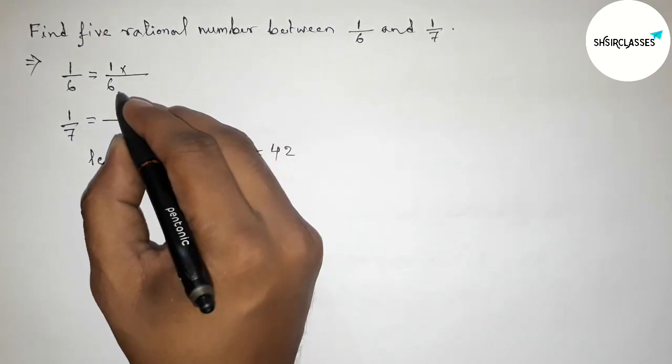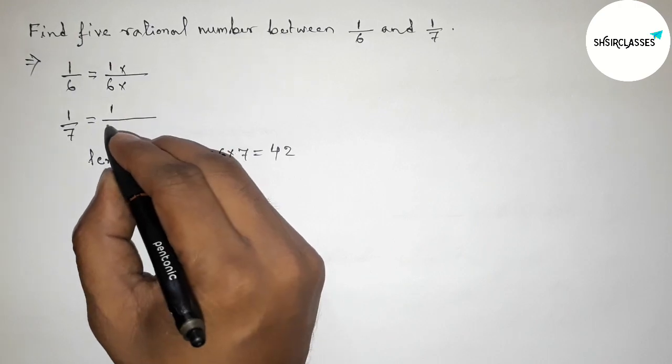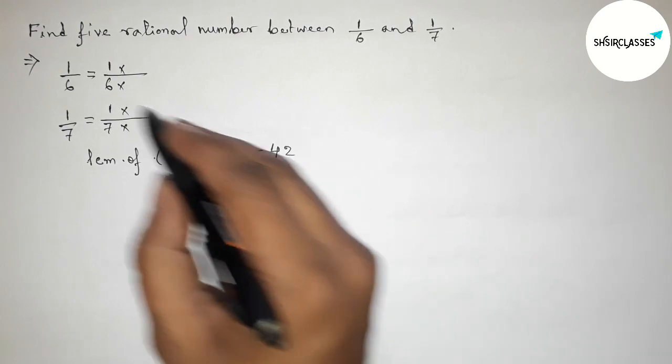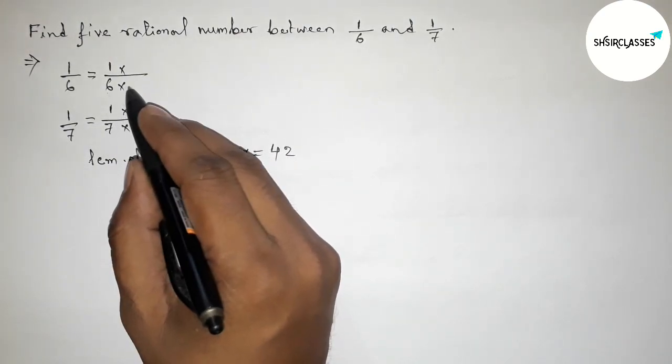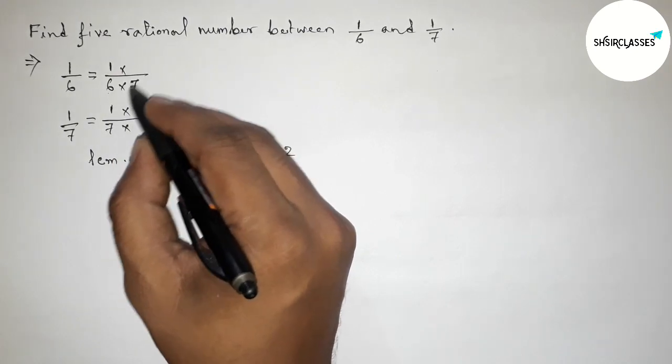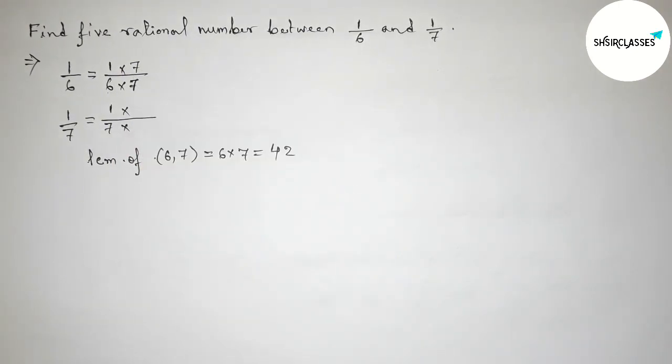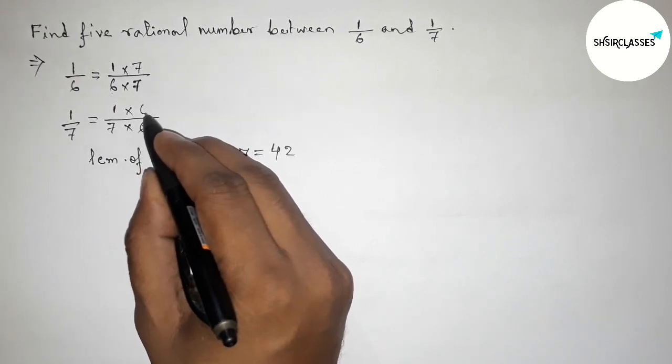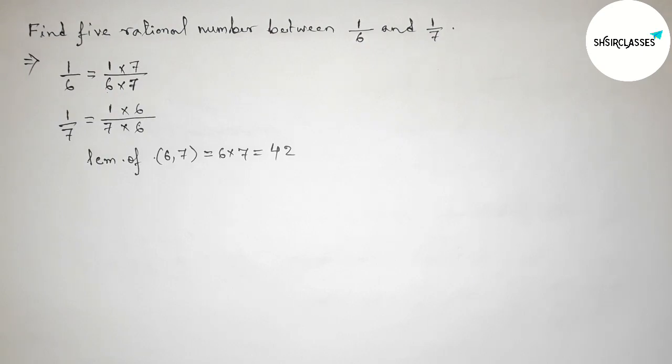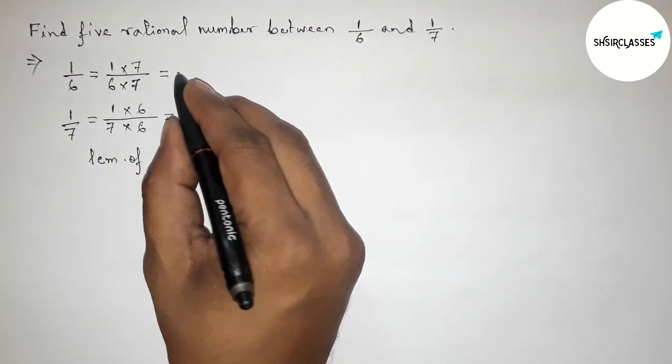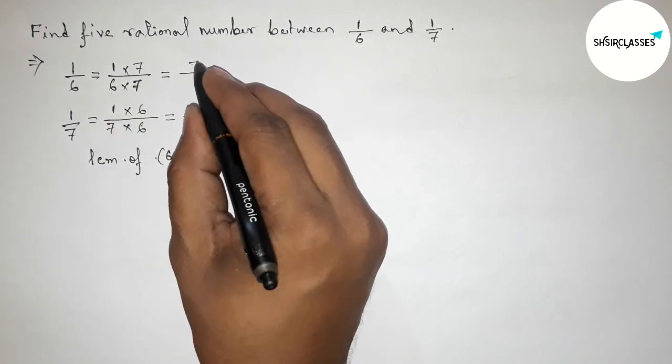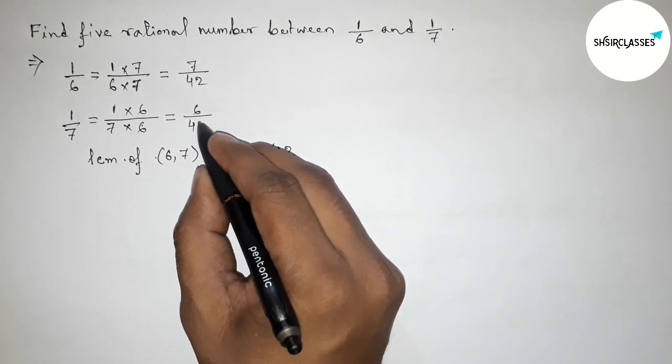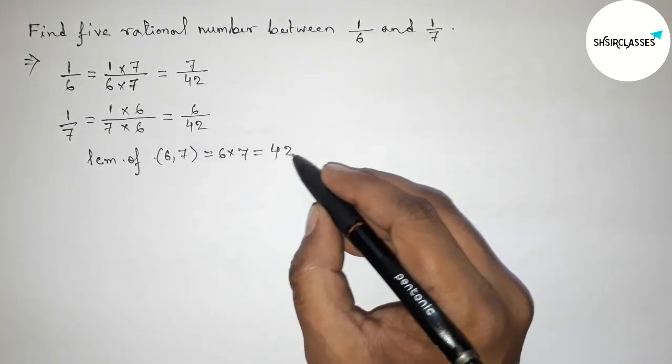Now, write down 1/6 and 1/7. To make the denominator 42, since 6 × 7 = 42, take 7 up and down. Similarly, since 7 × 6 = 42, take 6 up and down. This equals 7/42 and 6/42.